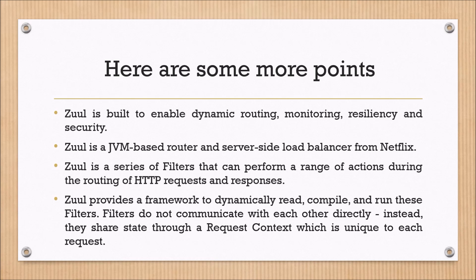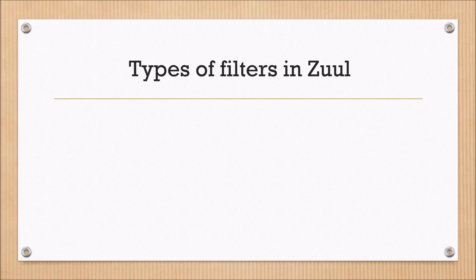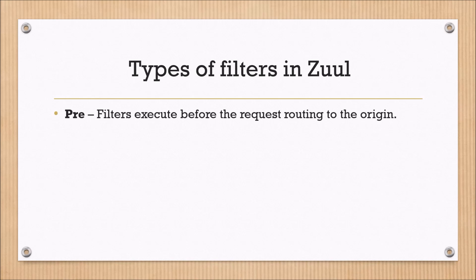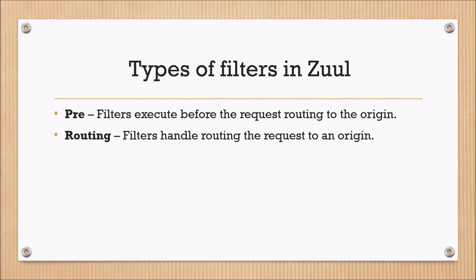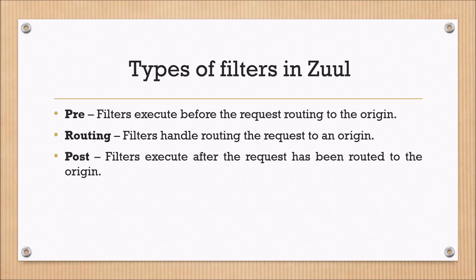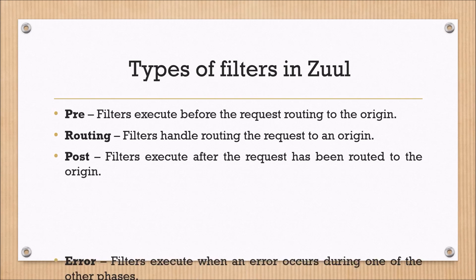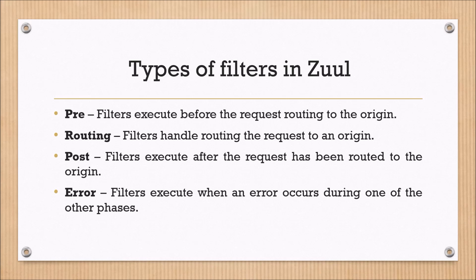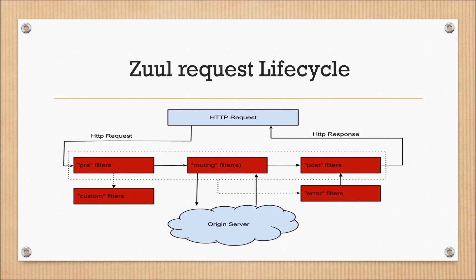Types of filters in Zuul: Pre filters execute before the request routing to the origin. Routing filters handle routing the request to an origin. Post filters execute after the request has been routed to the origin. Error filters execute when an error occurs during one of the other phases.